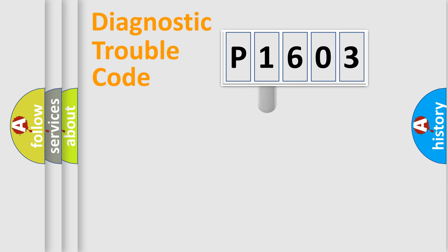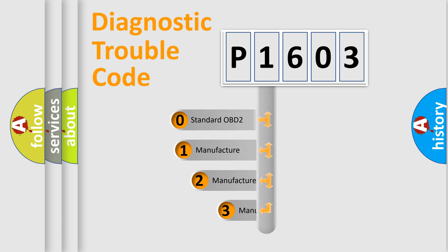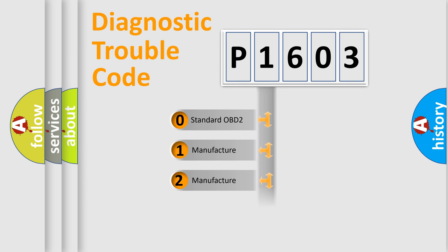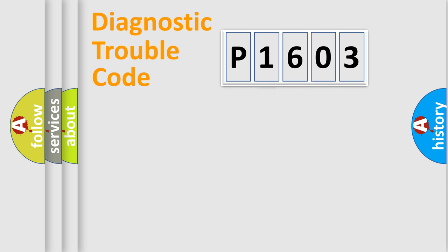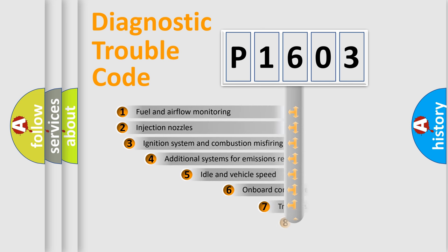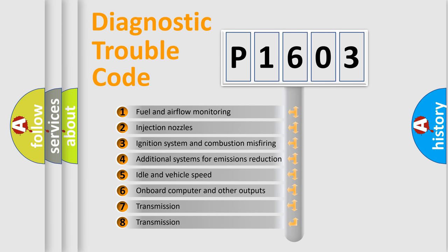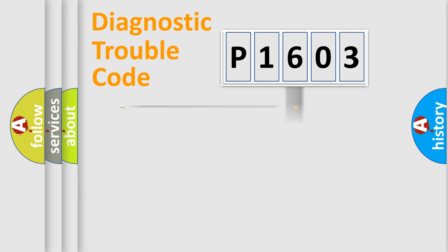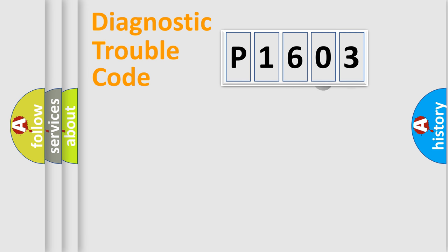This distribution is defined in the first character of the code. If the second character is expressed as zero, it is a standardized error. In the case of numbers 1, 2, or 3, it is a more specific expression of the car-specific error. The third character specifies a subset of errors. The distribution shown is valid only for the standardized DTC code.